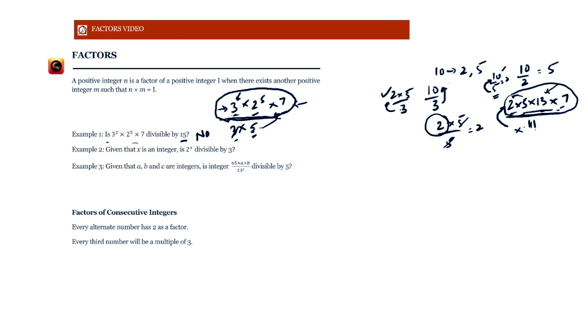Given that x is an integer, is 2 to the power x divisible by 3? So x is an integer, it could be 1, 2, 3, whatever. Let's say it's 2 cubed, so 2 into 2 into 2. Is it divisible by 3? x could be any value. We're just assuming one of the values that x is equal to 3.